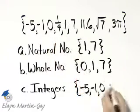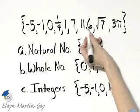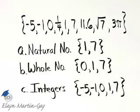That's not an integer. One is an integer. Seven is an integer. That's not, that's not an integer, and that's not an integer. There are my integers.